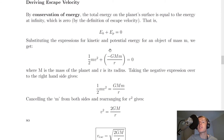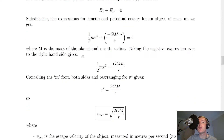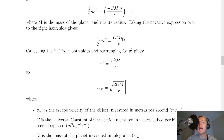Substituting the expressions for kinetic and potential energy for an object of mass m, we get one half mv squared plus minus GMm over r is equal to zero. This term is in brackets because we've got the minus there and a plus there. This was our expression for gravitational potential energy when we have two masses, where capital M is the mass of the planet and r is its radius. Taking the negative expression to the right-hand side gives us one half mv squared equals GMm over r. We've got a small m on both sides so we can cancel it and rearrange for v squared.